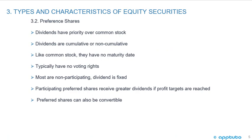Now we're going to look at preference shares. Some characteristics: dividends have priority over common stock, and dividends can be cumulative or non-cumulative. Cumulative means that if a preferred dividend is not paid, the common dividend cannot be paid until the dividends owing to the preferred shareholders are paid. Non-cumulative means if it's not paid, that dividend will be missed. Like common stock, preferred shares have no maturity date. They typically have no voting rights, and most are non-participating with a fixed dividend — that's the key thing. The fixed dividend makes preferred shares similar to bonds in a way.